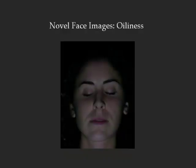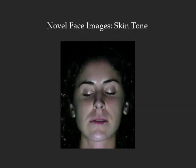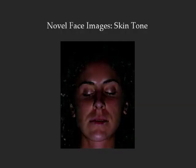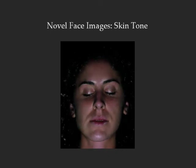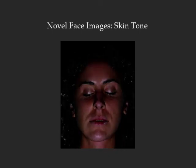Here we show novel face images that correspond to different degrees of oiliness, generated by scaling the direct image and recombining with the global image. The skin tone is modified by changing the hue of the global image and recombining with the direct image.